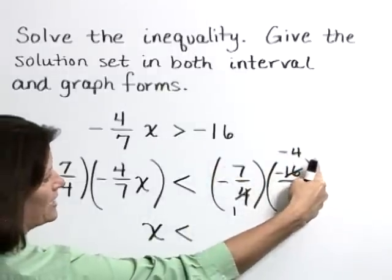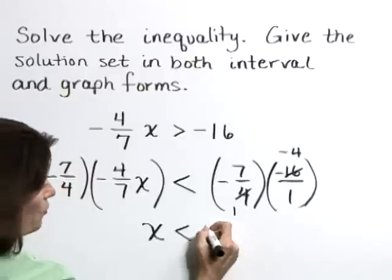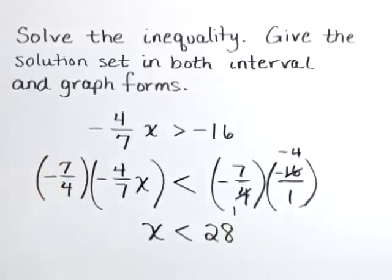Multiplying in the numerator, we get a positive 28 in the denominator, 1. And 28 over 1 is just 28. So our answer is going to include all values x that are less than 28.